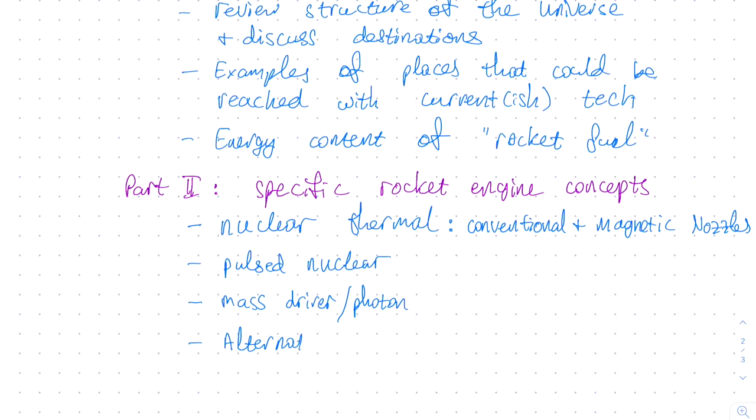In a mass driver, a linear accelerator is used to accelerate a solid mass out the back of the rocket, without ever having to heat up the reaction mass. In a photonic engine, light pressure from, say, a laser, or some other light source, is used to push the rocket. The advantage of these engines is the reaction mass stays cold, and therefore, there are no limits on heating up the rocket engine.